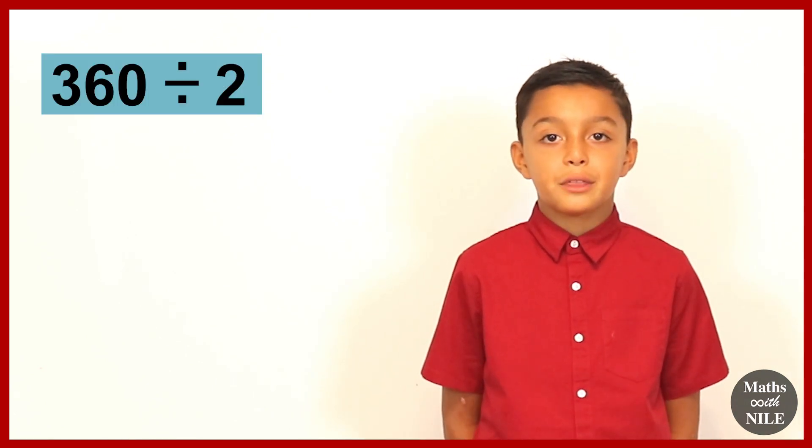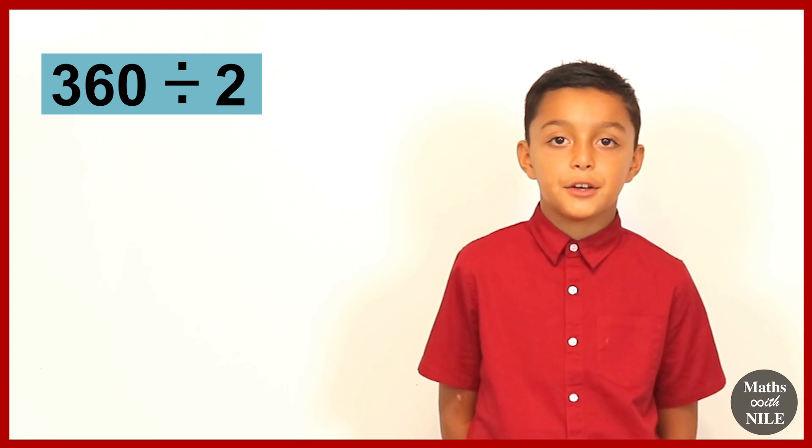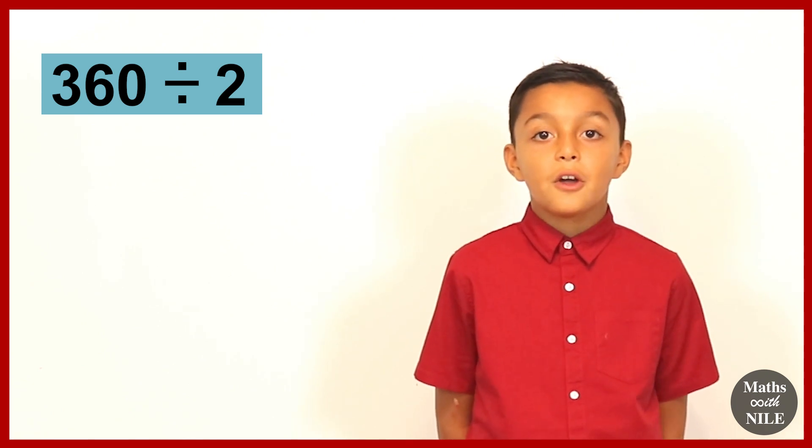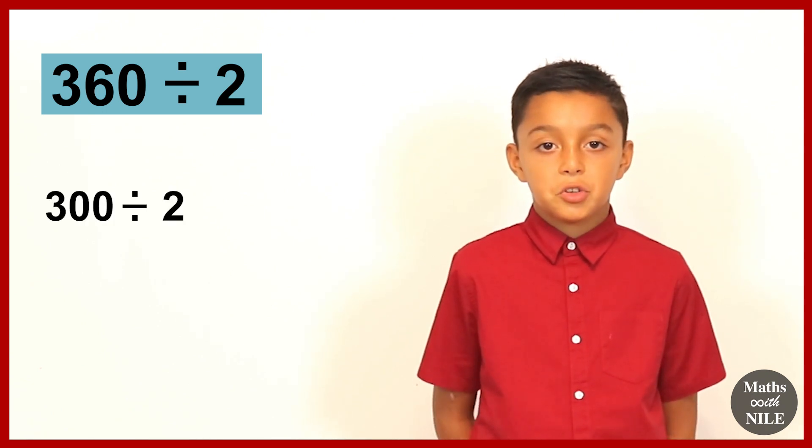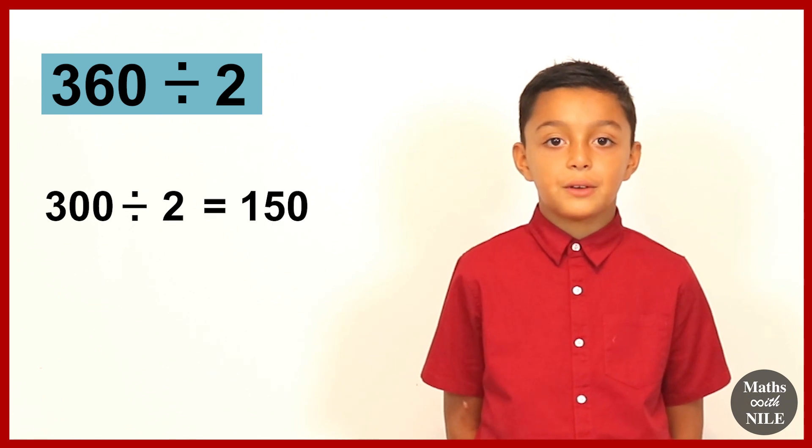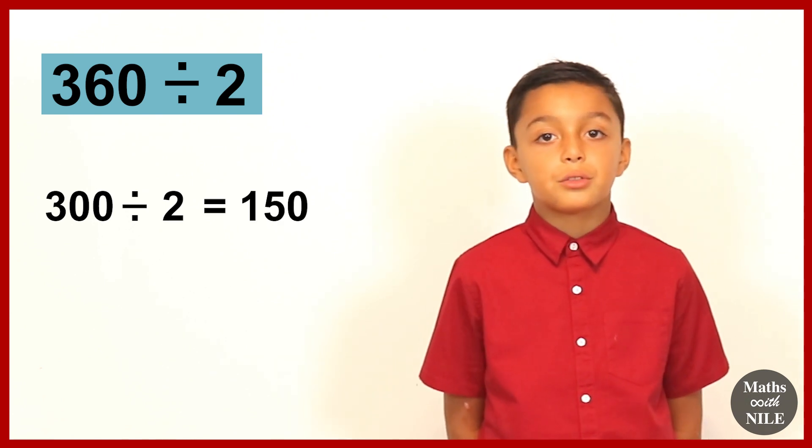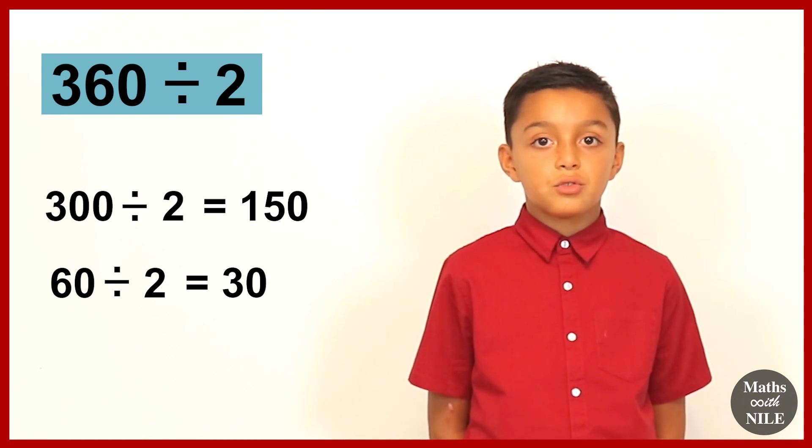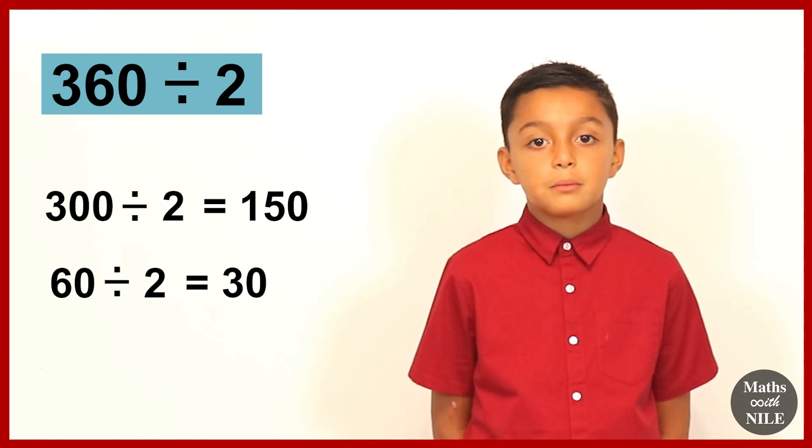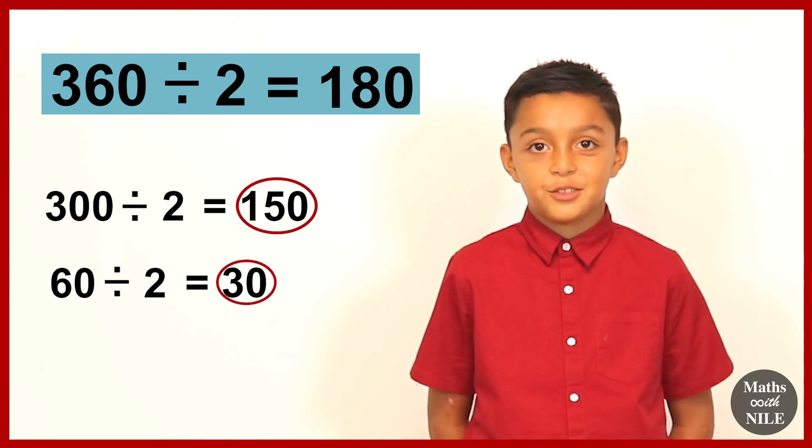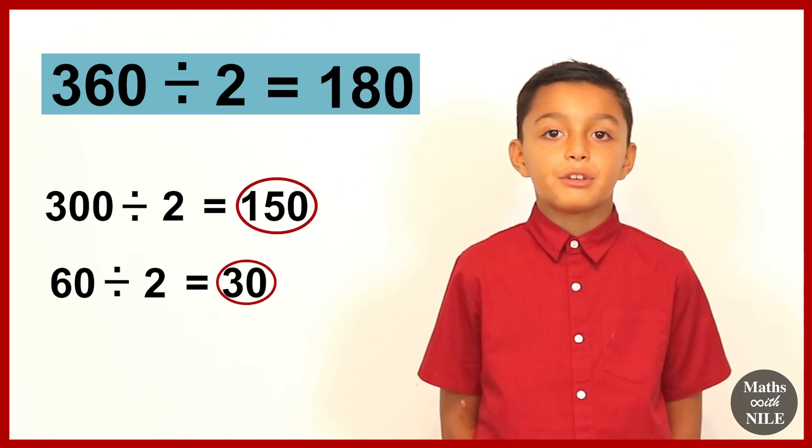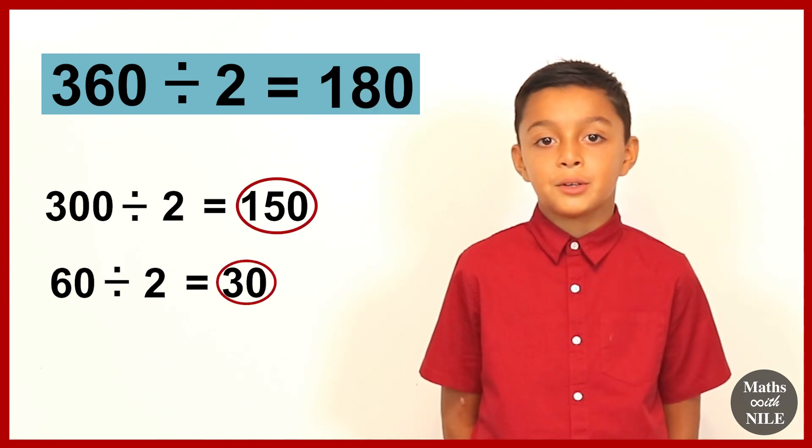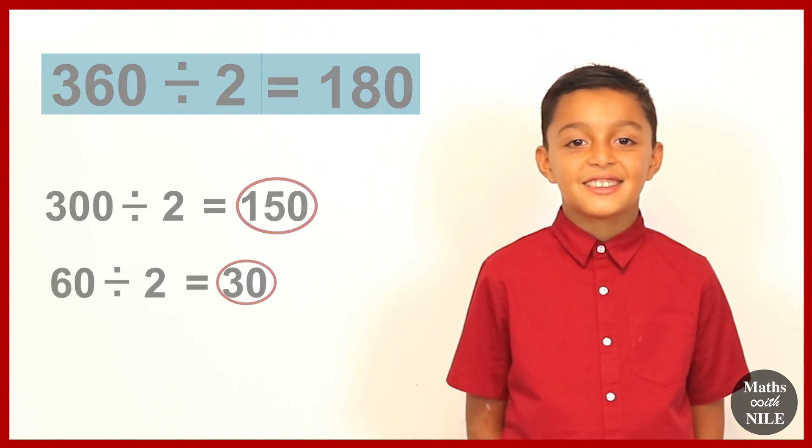Question number 9. 360 divided by 2. So we can do 300 divided by 2, which is 150, and then 60 divided by 2, which is 30, and then 150 plus 30 is 180. So 360 divided by 2 equals 180. Very good, Niall.